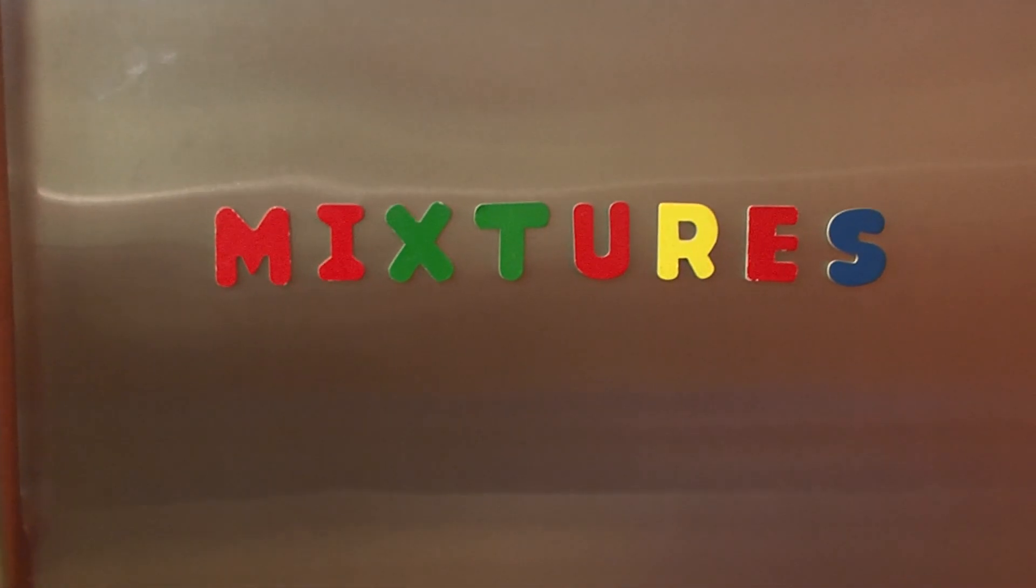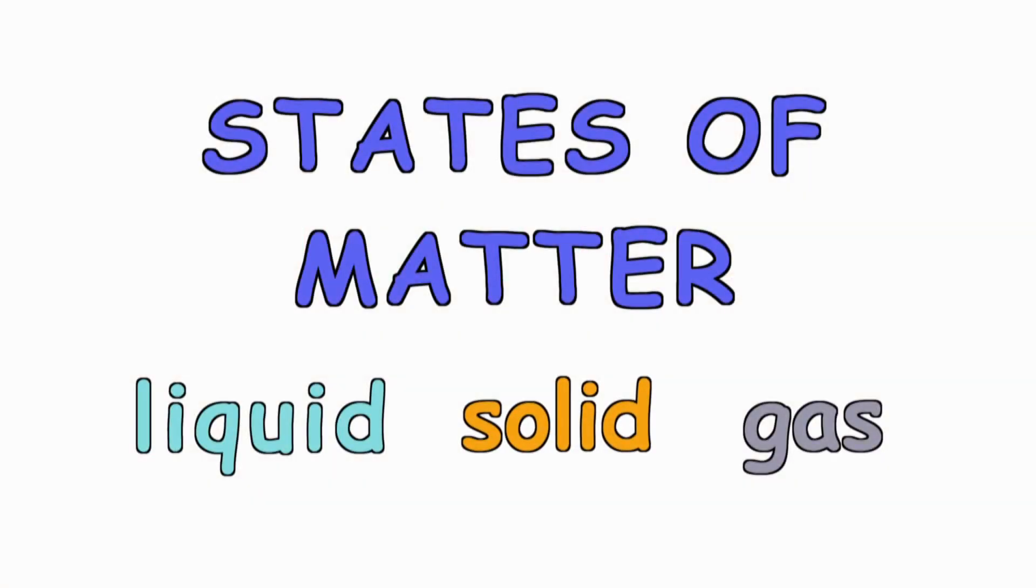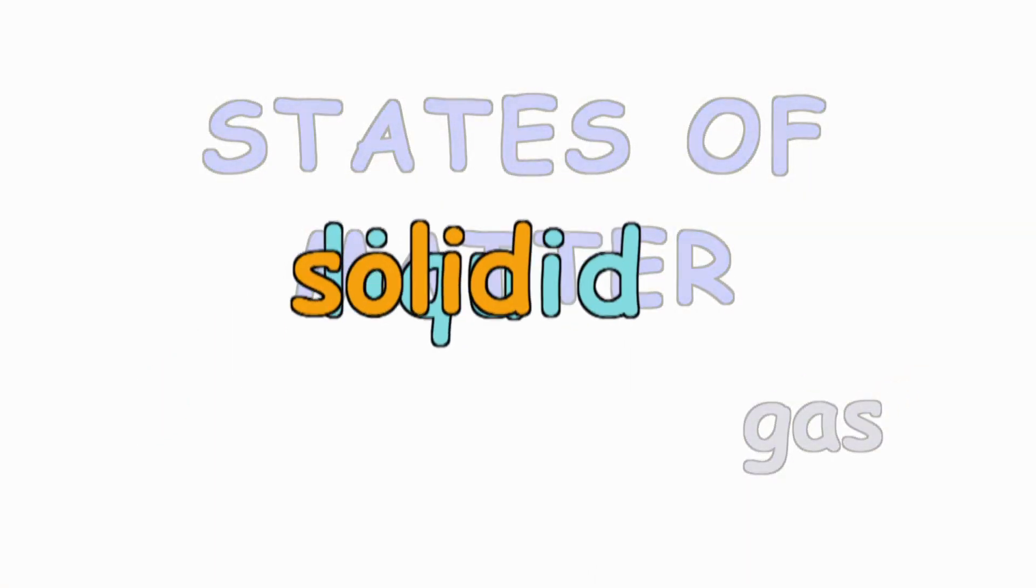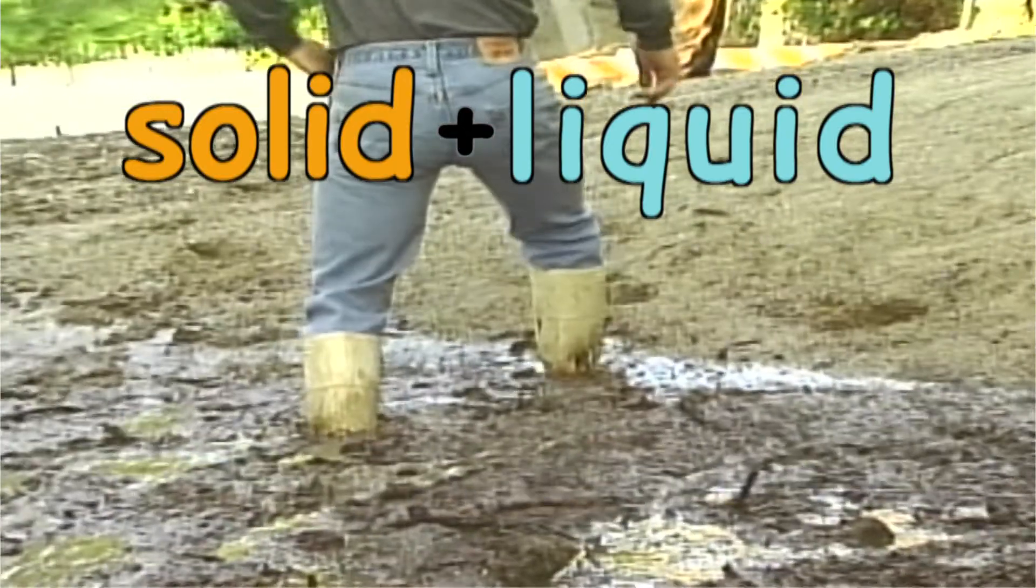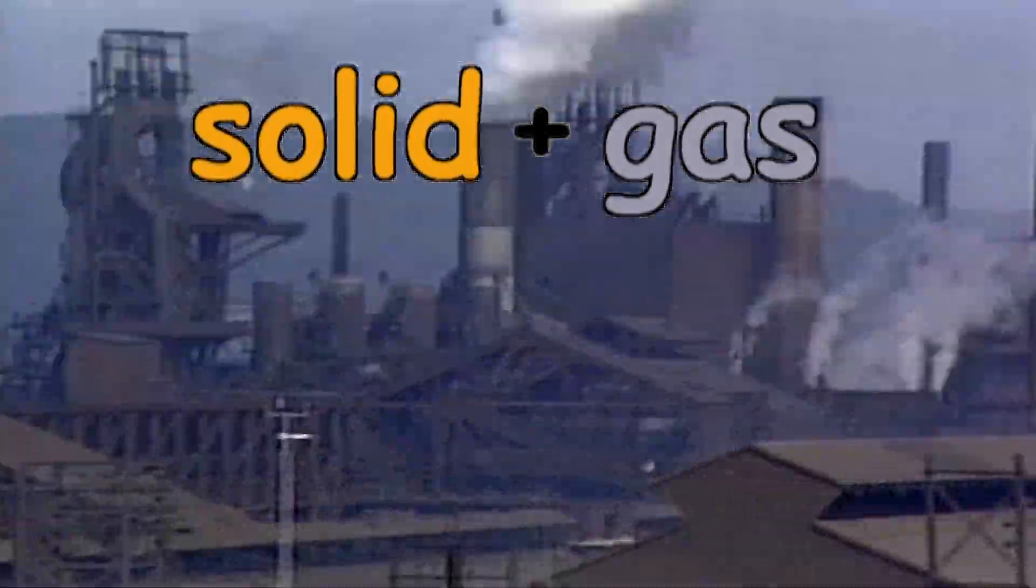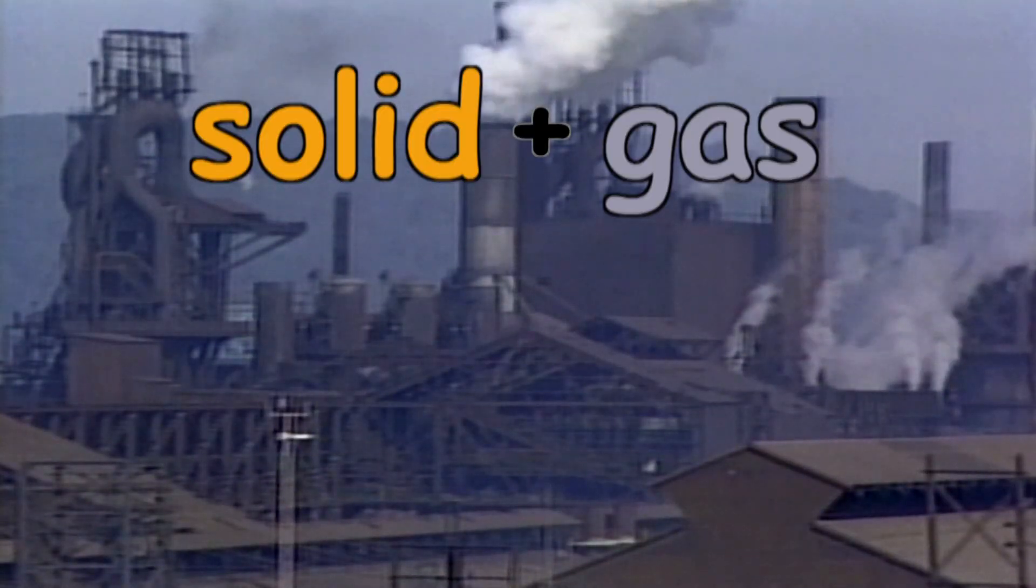Most things in nature are mixtures of matter in one common state or another. Solids and liquids, for example, like mud, a mix of dirt and water. Or solids and gases, like smoke, a mix of solid, if tiny, particles and air, which is itself a mix of gases: nitrogen, oxygen, and water vapor.